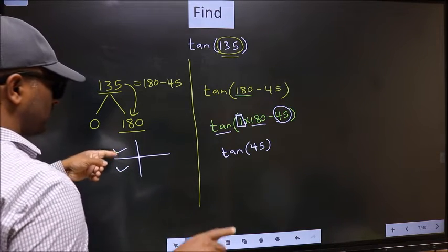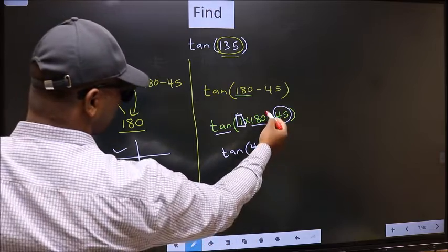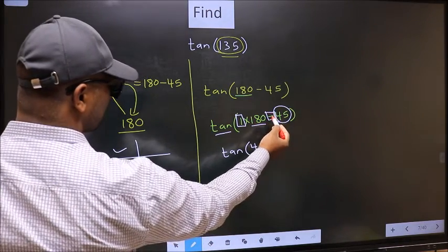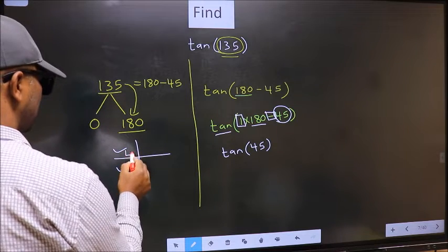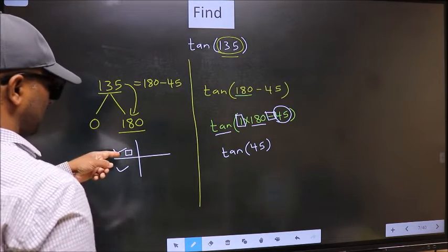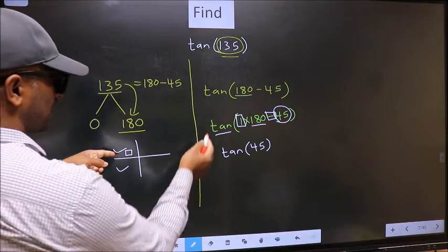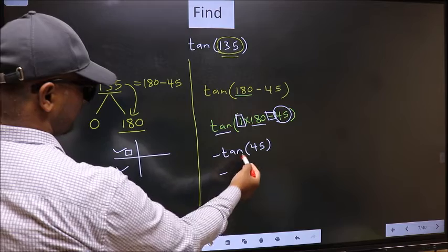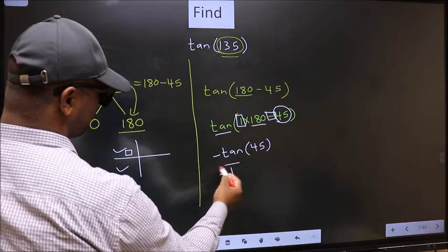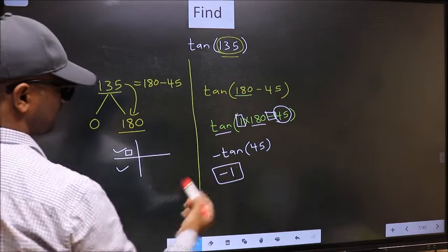So now to select the quadrant, we should look at this symbol. Here we have negative. That means the angle lies in the second quadrant. And in the second quadrant, tan is negative. So we should put negative. So negative tan 45 is 1. This is our answer.